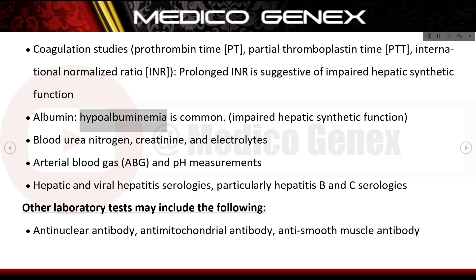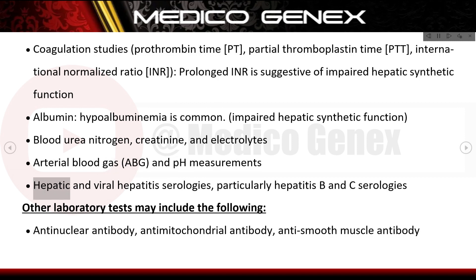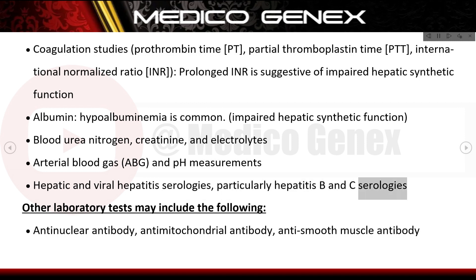Albumin is assessed, as hypoalbuminemia is common due to impaired hepatic synthetic function. Additional tests include blood urea nitrogen, electrolytes, arterial blood gas (ABG) and pH, and hepatic and viral hepatitis serologies — particularly hepatitis B and C.